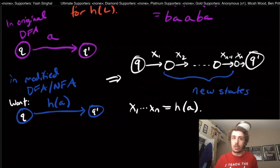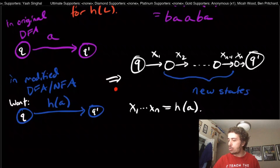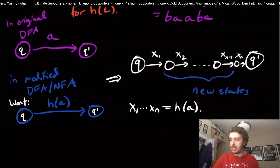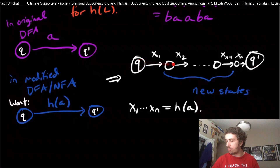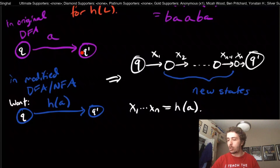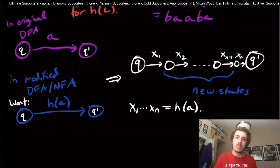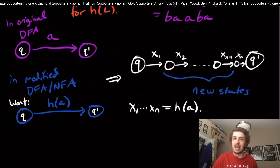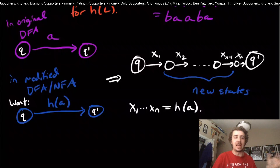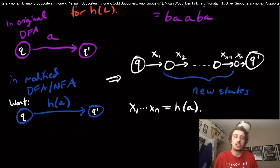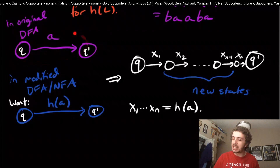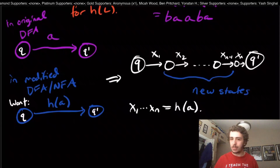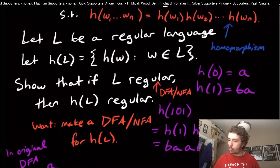For the reverse direction of the proof: if a string is accepted by the modified machine, going from one state to another via a sequence of intermediate transitions must correspond to some transition in the original DFA, which corresponds to a character. You can then reconstruct a string that the original DFA accepts — not necessarily a unique one, but one it accepts. So if the modified machine accepts something, the original does too, and vice versa.